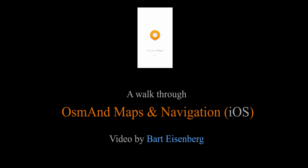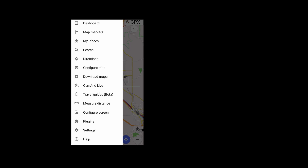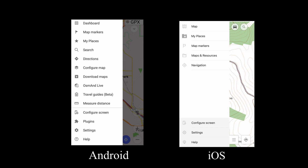This video will give an overview of the iOS version of OsmAnd Maps and Navigation. Debuting in 2010, OsmAnd is best known as an open source Android application. The iOS version debuted in 2015 and still has fewer features, but developers have steadily closed the gap.